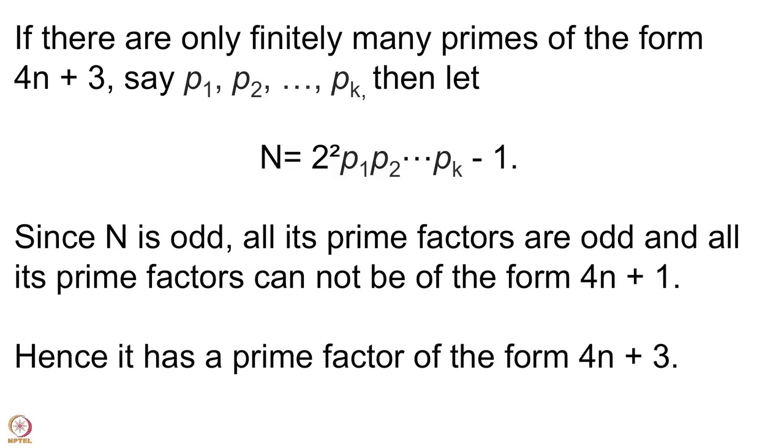This way we get a prime factor of N which is of the form 4n+3, and this new prime factor cannot equal any of p1, p2, ..., pk — because if it were one of those, it would divide the product 4·p1·p2·...·pk, and it also divides N, so it would divide 1, which is a contradiction. So we have a new prime of the form 4n+3. Calling it pk+1, we can repeat the process to get yet another prime of the form 4n+3. This contradicts the assumption that there were only finitely many primes of the form 4n+3. Therefore, there are infinitely many primes of the form 4n+3. This completes the proof.